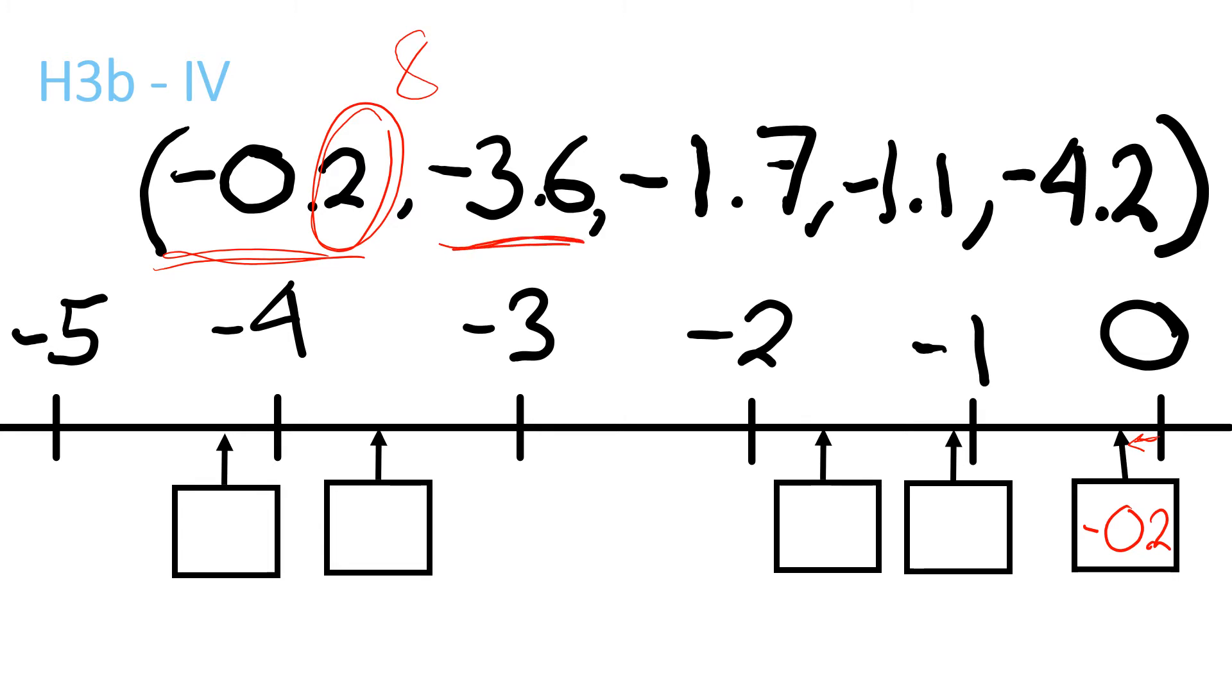And then for this one, it's minus 3.6. So minus 3, and you've got to try to figure out where minus 3.6 is. So that's about 3.5, we go a little back from that, that's minus 3.6 there. Then we do minus 1.7, we look for...